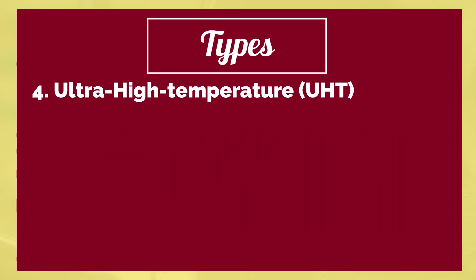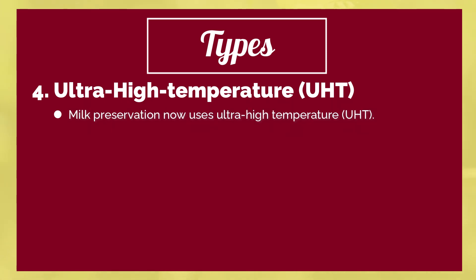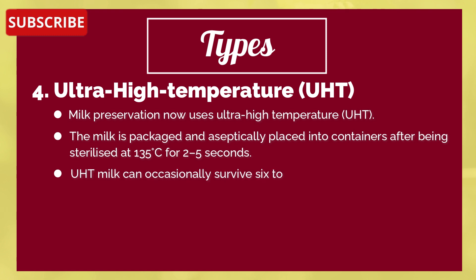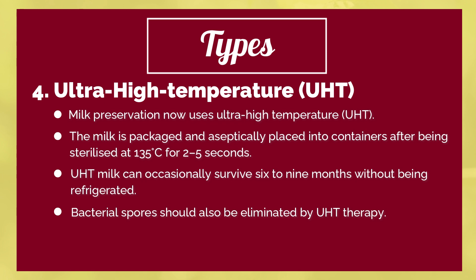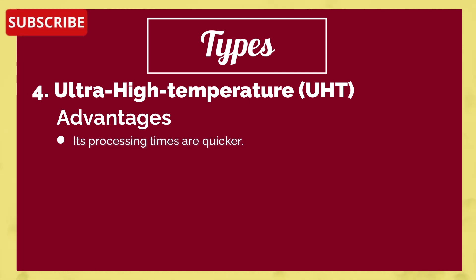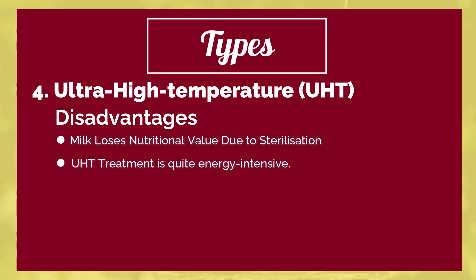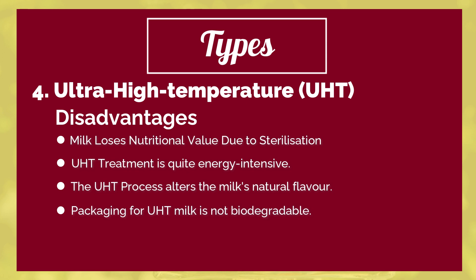The fourth type is ultra-high temperature (UHT) milk preservation. The milk is sterilized at 135°C for two to five seconds, then aseptically packed into containers. UHT milk can occasionally survive six to nine months without refrigeration, and bacterial spores are also eliminated. Advantages include quicker processing times and longer shelf life. Disadvantages are that milk loses nutritional value due to sterilization, UHT treatment is quite energy intensive, the milk's natural flavor is altered, and UHT packaging is not biodegradable.